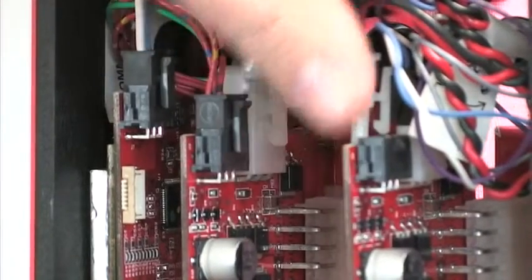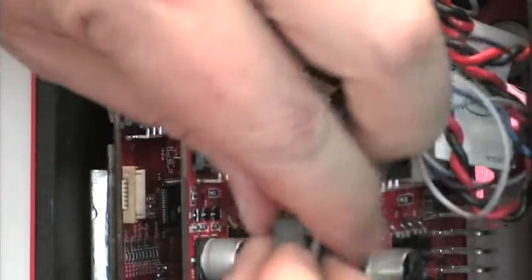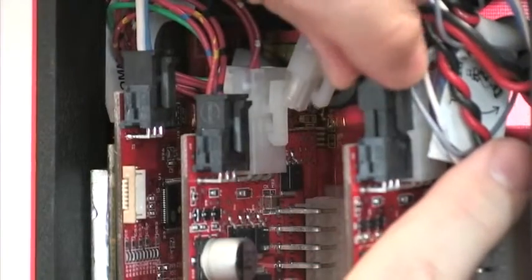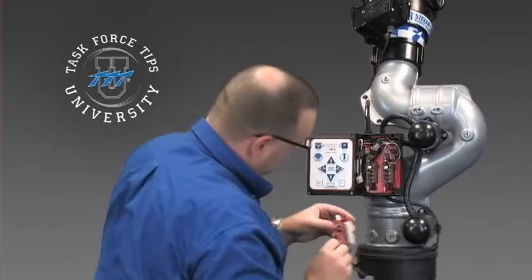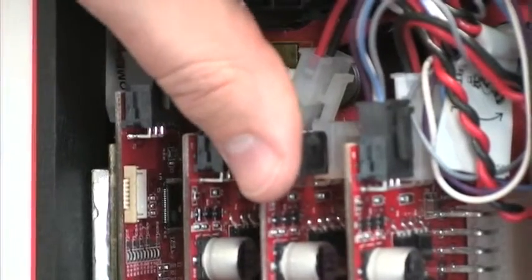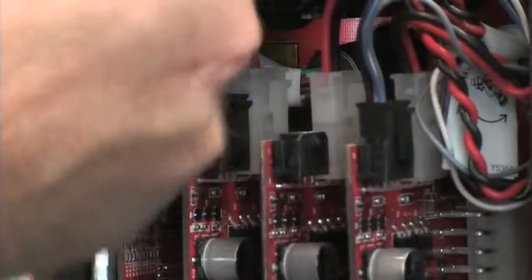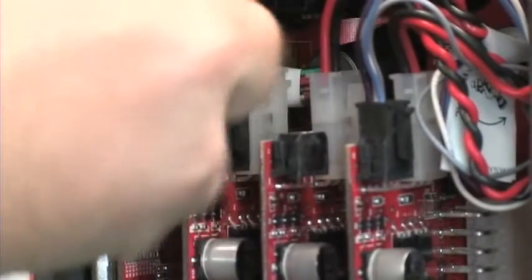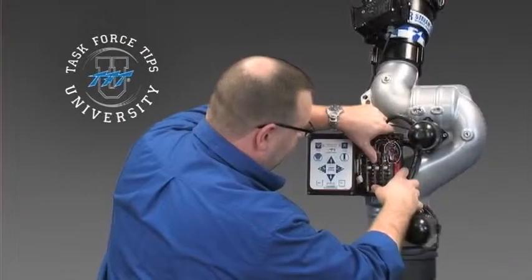Once that's mounted back in there, we'll go ahead and reconnect our power wire and our communication wire. Then we can go ahead and put this horizontal board back in which was moved over. Connect power, connect communications. Make sure everything is firmly mounted in there.